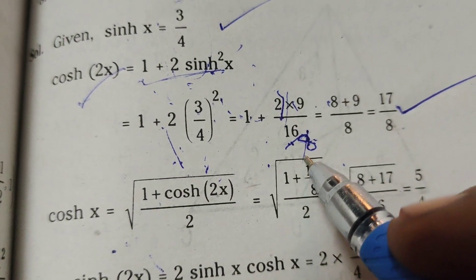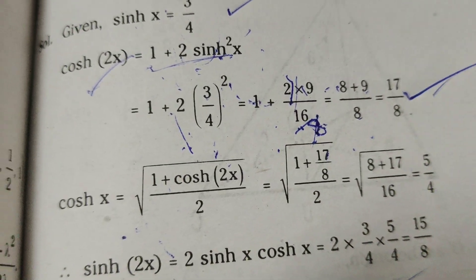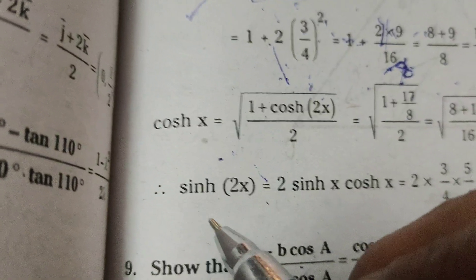That's 18/16, which simplifies to 9/8. So 8 plus 9 over 8 equals 17/8. This is cosh(2x). Now find sinh(2x).